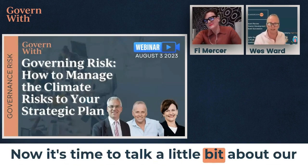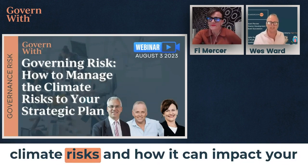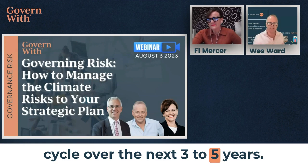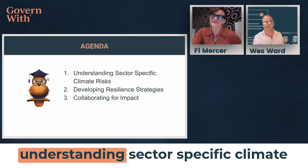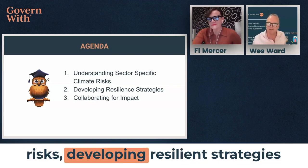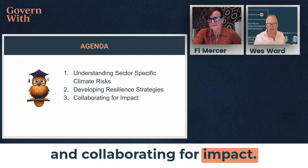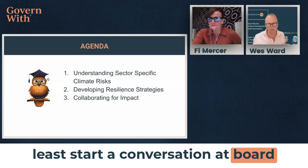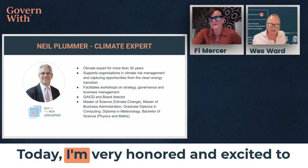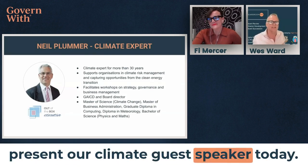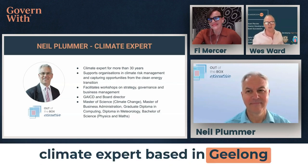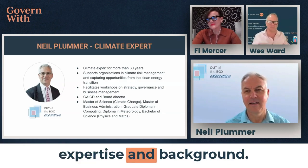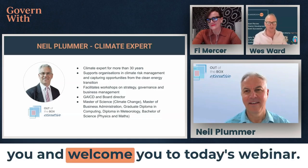Now it's time to talk about our guests and the topic for today: climate risks and how they can impact your strategic plan and your next governance cycle over the next three to five years. The agenda today covers: understanding sector-specific climate risks, developing resilient strategies, and collaborating for impact. We want to make sure you have tangible, practical takeaways you can implement now or at least start a conversation at board level. I'm very honoured to present our climate guest speaker, Neil Plummer, based in Geelong and a leader at Out of the Box Executive.